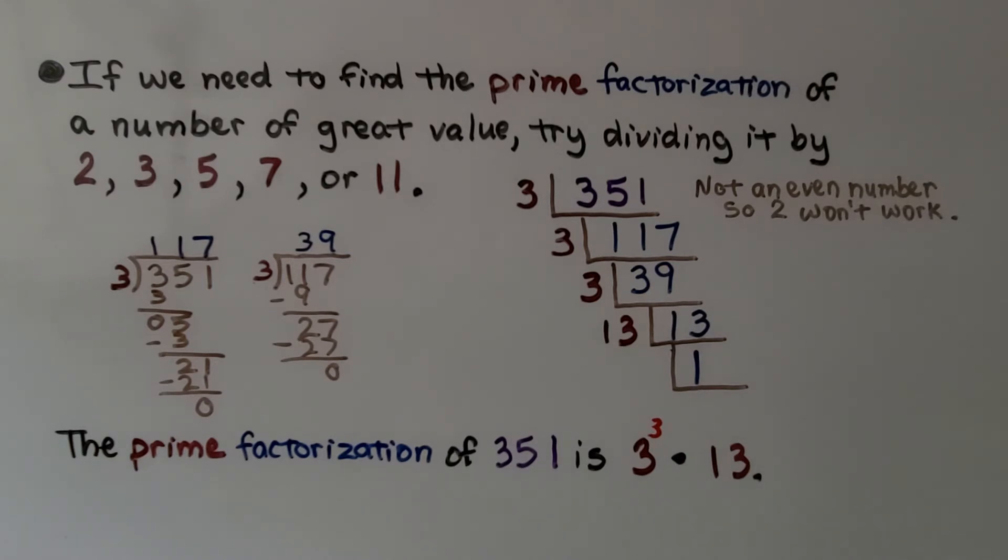If we need to find the prime factorization of a number of great value, try dividing it by 2, 3, 5, 7, or 11, and see what happens.